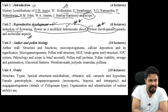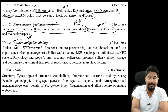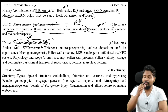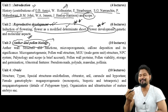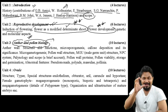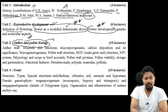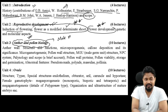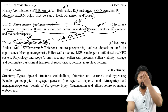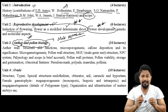Third is anther and pollen biology - Unit 3. This covers the male reproductive structure in detail. Anther is a male reproductive structure - anther is very closely related to pollen. Pollen grains develop within the anther.